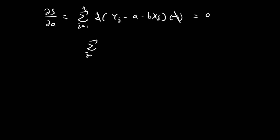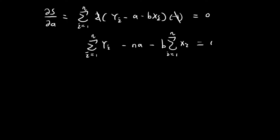We can divide both sides by 2 and negative 1 to get rid of those terms. In the end, we have the sum of all the y terms, minus n copies of A, minus B times the sum of all the x terms, equal to 0.